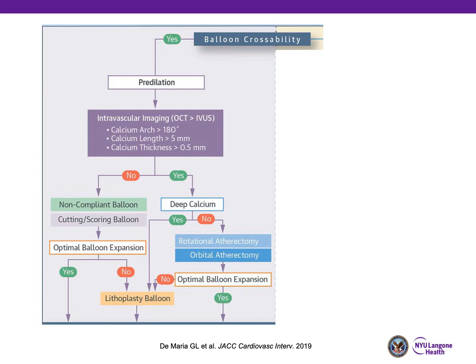If these three parameters suggest higher risk of not expanding, you want to assess whether there is evidence of deep wall calcium. More often than not, atherectomy — whether rotational or orbital — will be a good approach. After atherectomy, it's important to confirm the lesion optimally expands with balloon dilation. If there is deep wall calcium, you could consider a lithoplasty balloon instead of atherectomy. If the high-risk parameters are not present, you may consider a balloon approach — I personally prefer a cutting or scoring balloon to fracture the calcium before using a non-compliant balloon at higher pressures. If there's still not optimal balloon expansion, at this point you may have created mini dissections, and it may be best to proceed to a lithoplasty balloon.